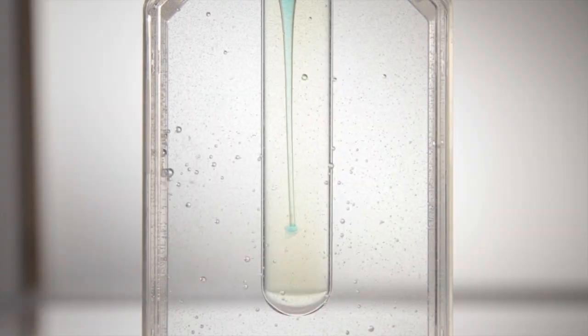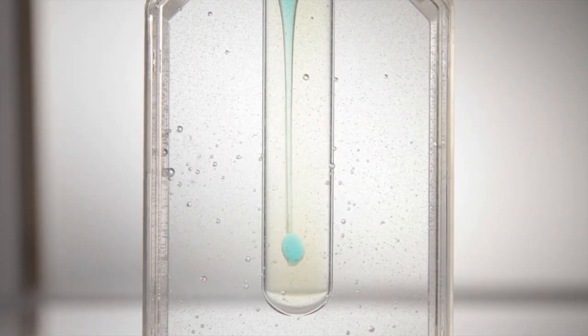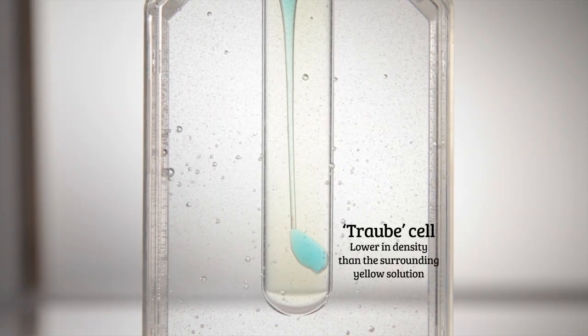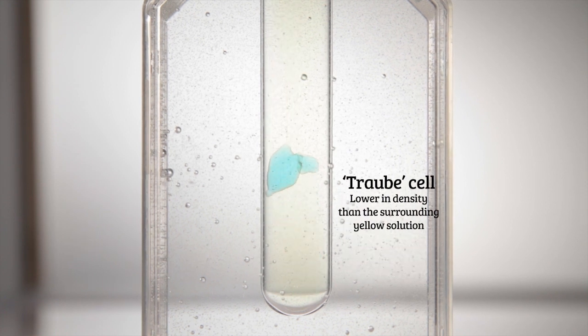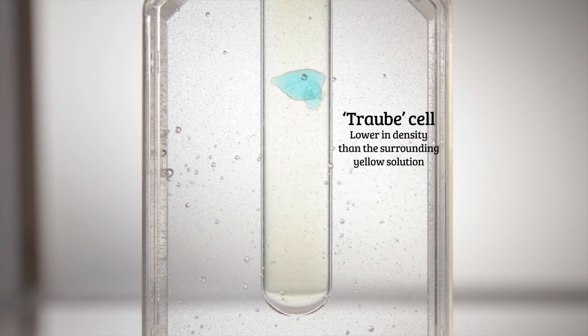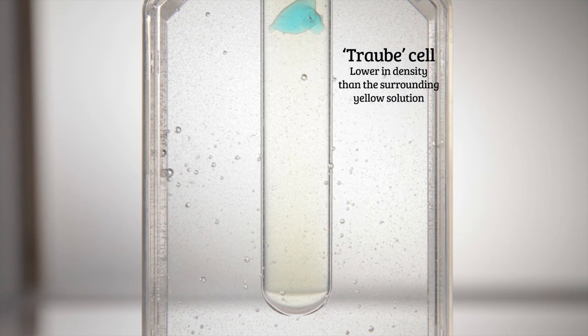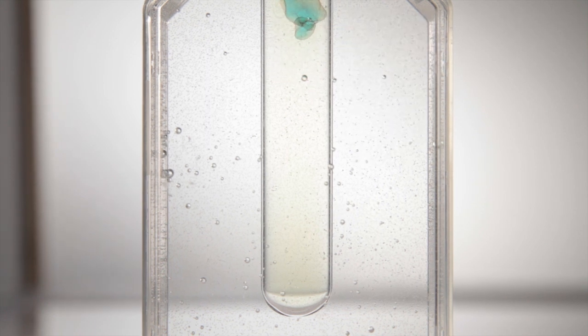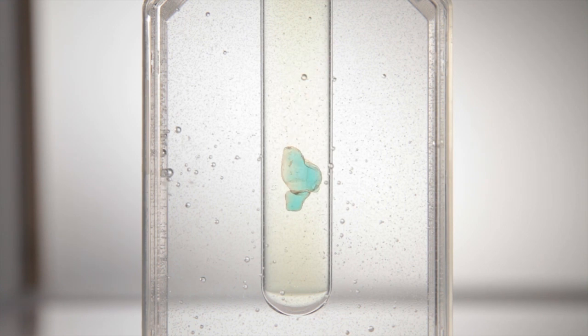If you make up the solutions at just the right concentrations, it's possible to get a little model cell which is both lower in density than and hypertonic to its surroundings. This means that it will float at first, but then over time, as the water diffuses out, it will sink and shrivel up, a bit like a crenated cell.